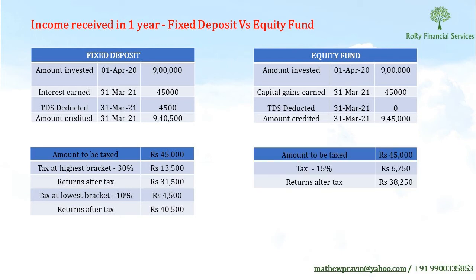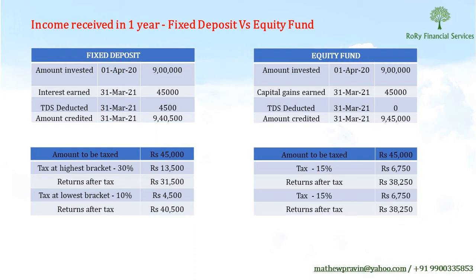In an equity fund, in the same example, 45,000 is the amount to be taxed. As mentioned earlier, it's a flat 15% tax, so the tax is 6,750 and returns after tax are 38,250. Even if I'm at the lower income bracket, it doesn't matter — my tax is calculated separately on my gain from the equity fund, so the taxation remains the same: 6,750, and my returns after tax are 38,250.